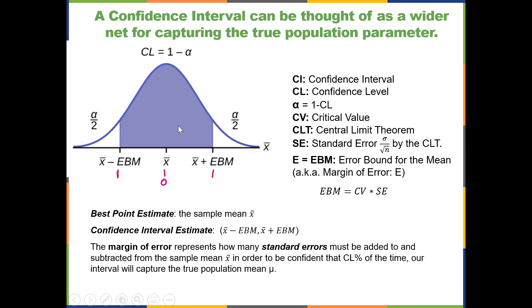The remaining area, 1 minus the confidence level, will be in the tails here and split in half. So let's say this was a 90% confidence interval. We would have an area of 0.9, and then the remaining 10% would be split up 5% in each tail.